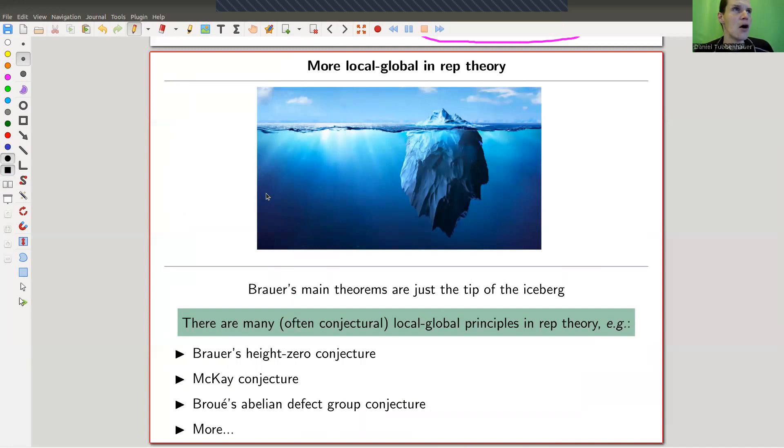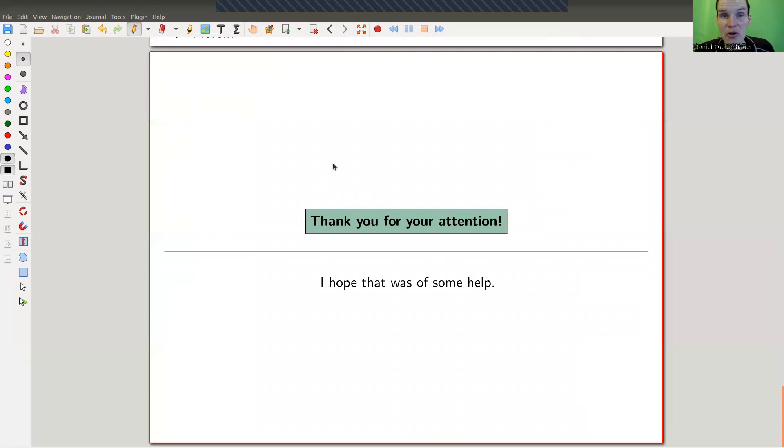Brouwer's theorems were just the tip of the iceberg. Nowadays most parts of modular representation theory are related to some versions of local-global principles. I'll mention maybe the most well-known ones: the conjecture of Brouwer, McKay conjecture, and Brouwer's Abelian defect conjecture. They're all kind of of the same type. There will be some subgroup involved and the subgroup should determine the big group.